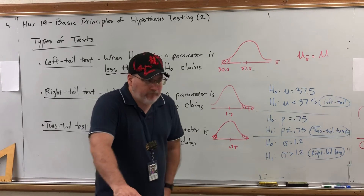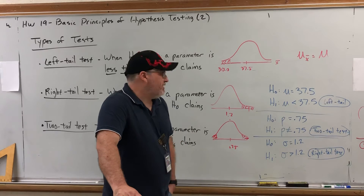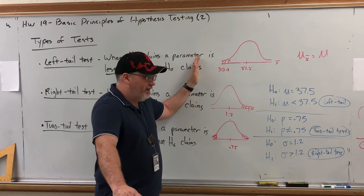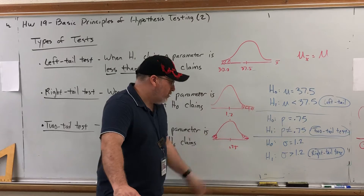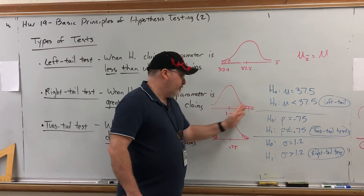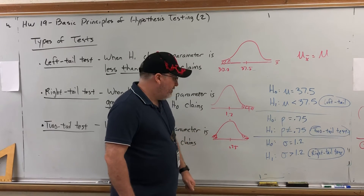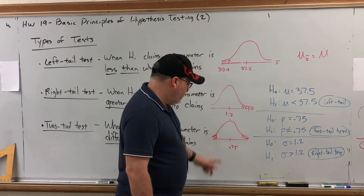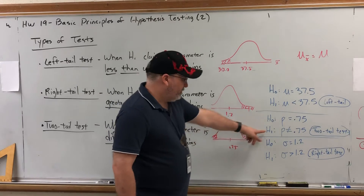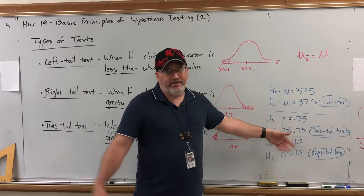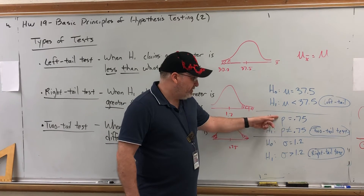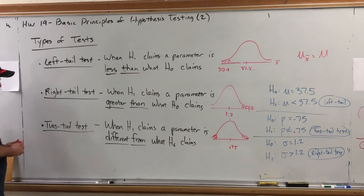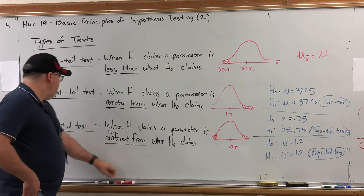An event is considered unlikely if its probability is less than 5%. So if we cut off the 5% tail on one side and a sample lands there, that's highly unlikely and suggests the null is probably incorrect. For a two tail test, because the alternative says 'not equal,' it's not specifying left or right — it's either side. So we can find evidence contradicting the null on either side. That's why a two tail test is associated with 'not equal to,' a right tail test with 'greater than,' and a left tail test with 'less than.'